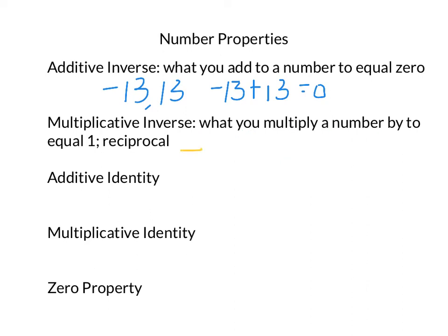Also, negative 7 fifths, its multiplicative inverse would be negative 5 sevenths. Because negative 7 fifths times negative 5 sevenths equals positive 1.